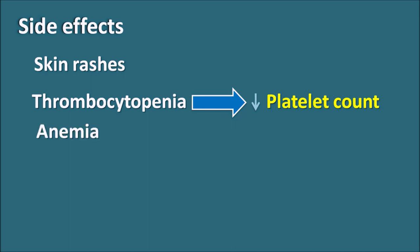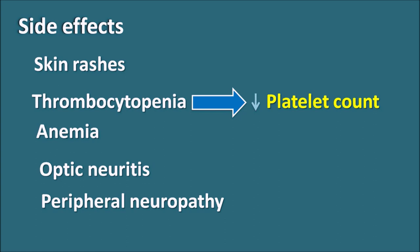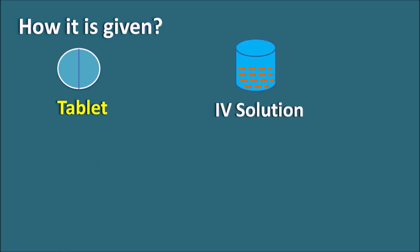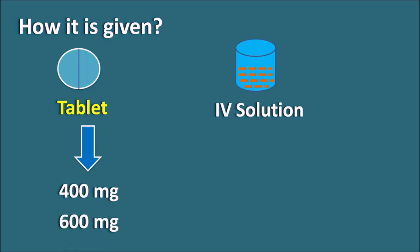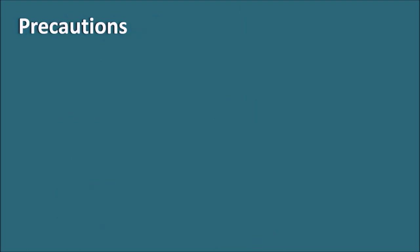Linezolid can also produce anemia. When used for more than four weeks (28 days), it can cause two important side effects: optic neuritis and peripheral neuropathy, leading to vision defects. This drug can also increase the risk of convulsions, so it should be given carefully to patients at risk. Linezolid is available as tablets of 400 mg and 600 mg, as well as an IV solution at 2 mg/mL.